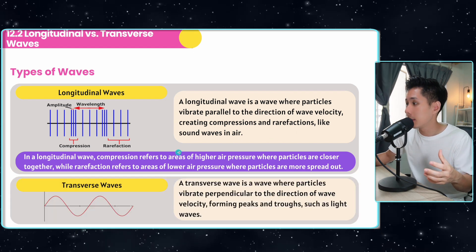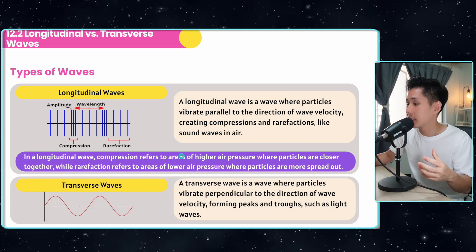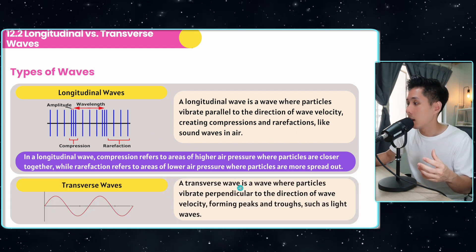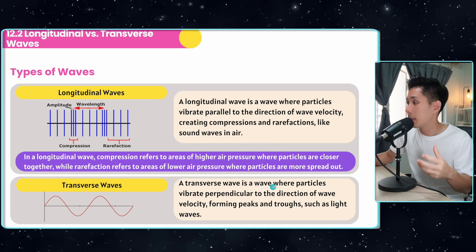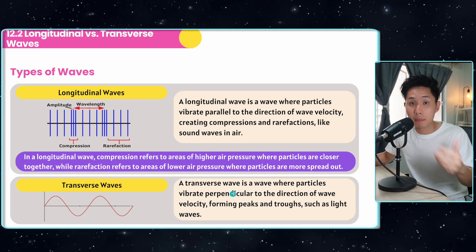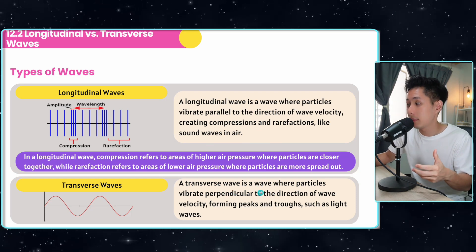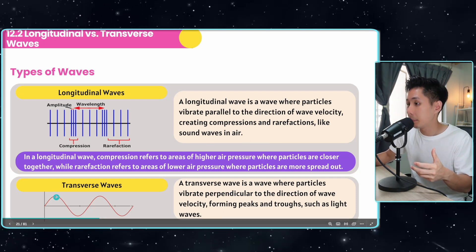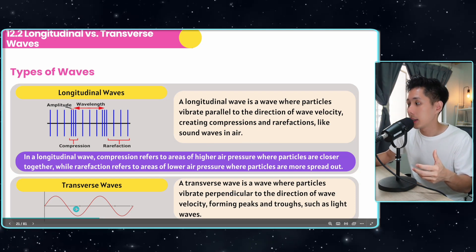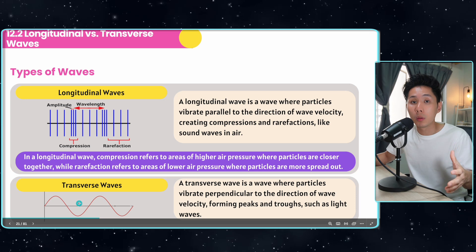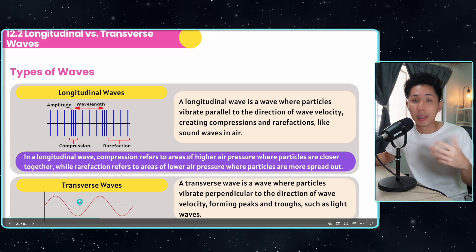In a transverse wave, particles vibrate perpendicular to the direction of the wave, forming peaks and troughs. An example of a transverse wave is a light wave.